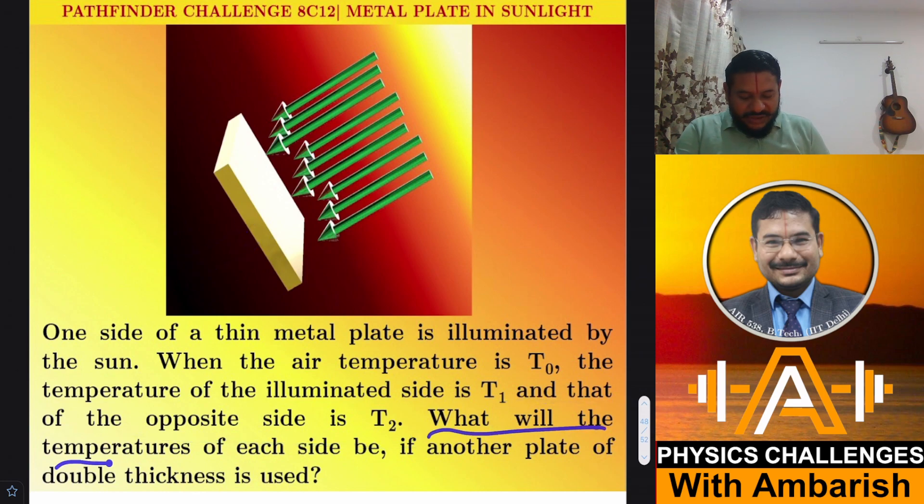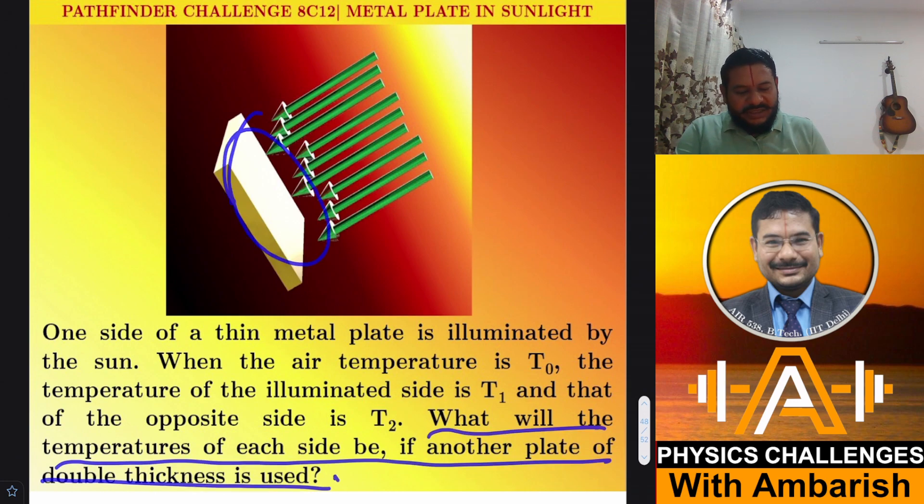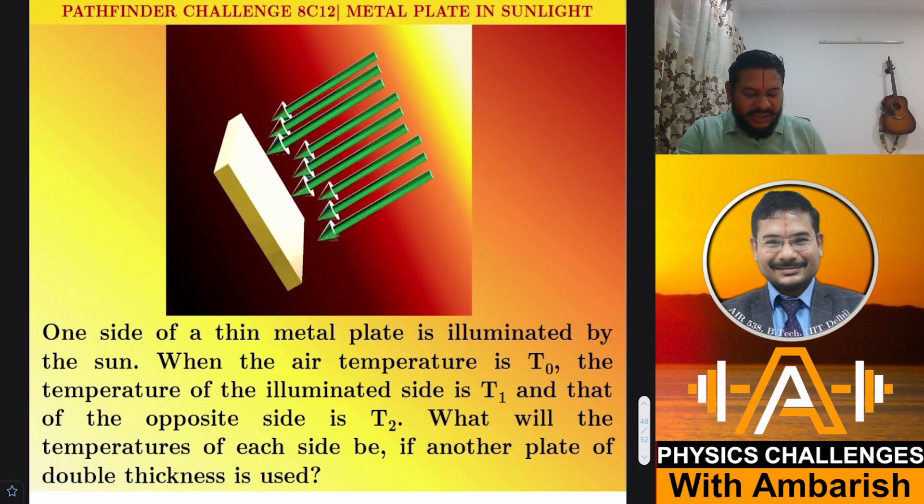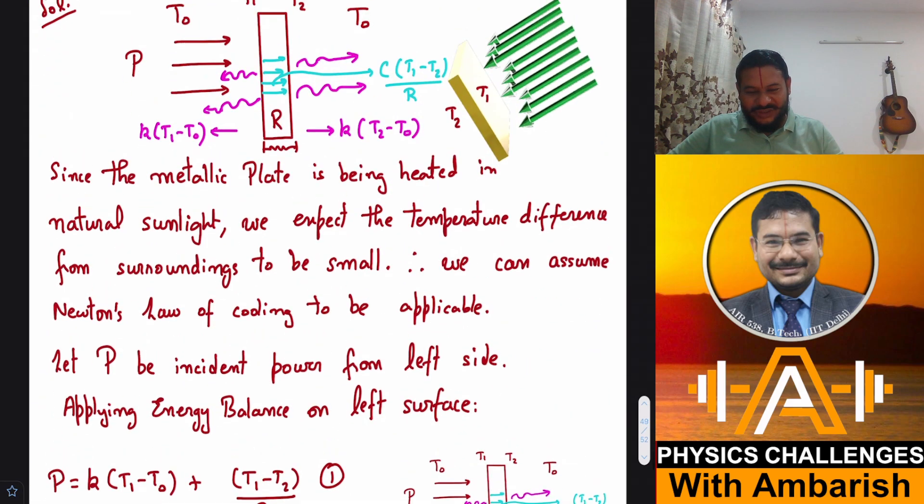What will the temperatures of each side be if another plate of double the thickness is used? So instead of this plate, suppose I had a plate of just double the thickness. So we want to find out what will be the temperatures, let's say T1 prime and T2 prime in terms of the given quantity. So if you want, you can give it a try.